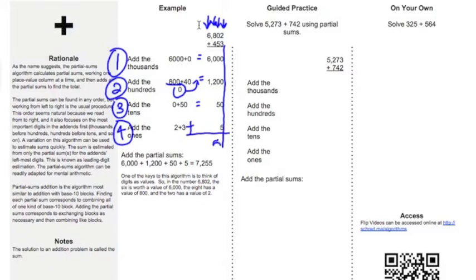And in this case, I get a 5, a 5, a 2, and a 7. So then my value is 7,255. 6,000 plus 6,000 plus 1,200 plus 50 plus 5 equals 7,255.